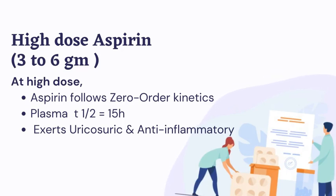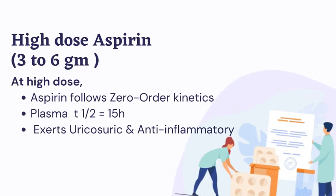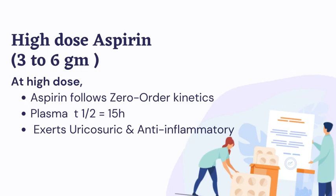High-dose aspirin refers to dosages between three and six grams. At high dose, aspirin follows zero-order kinetics and the plasma T-half increases to around 15 hours. At this dose, aspirin exerts uricosuric and anti-inflammatory effects.